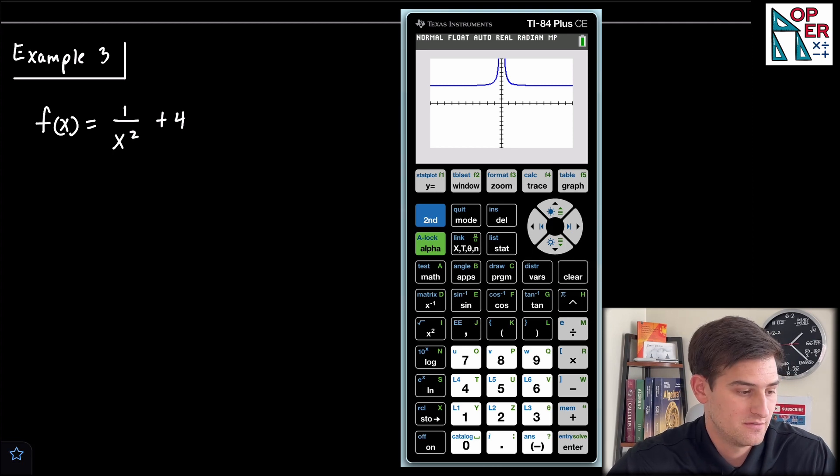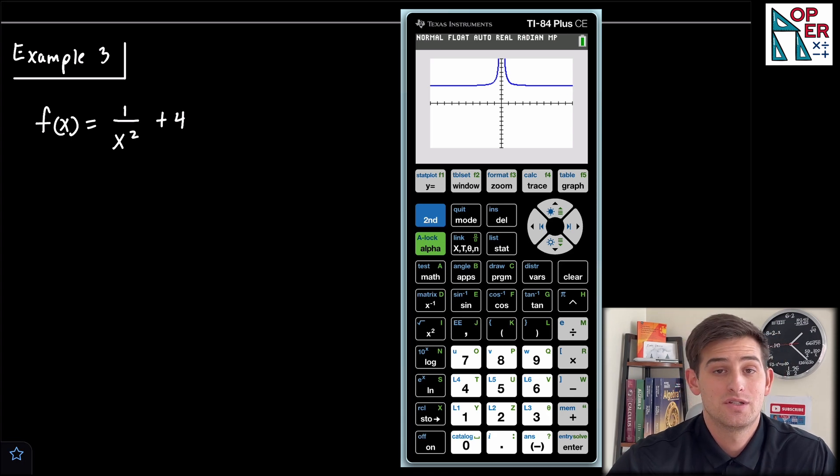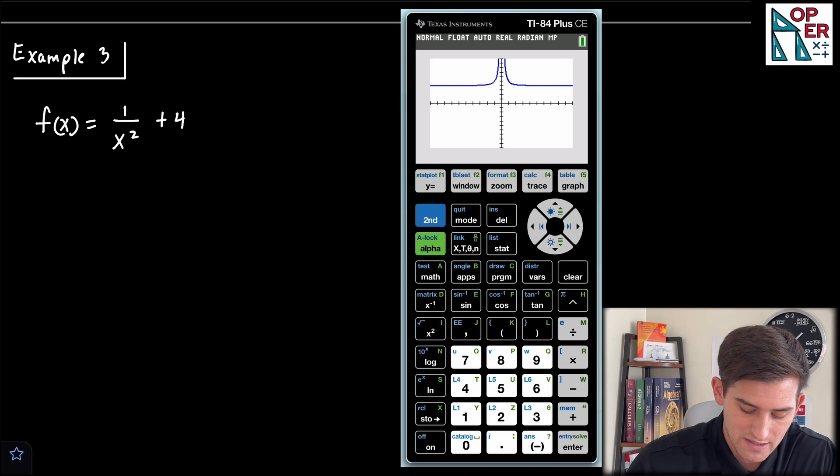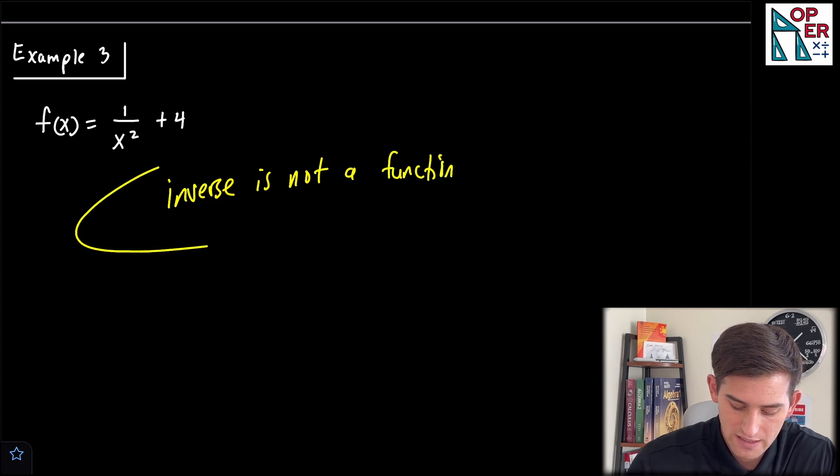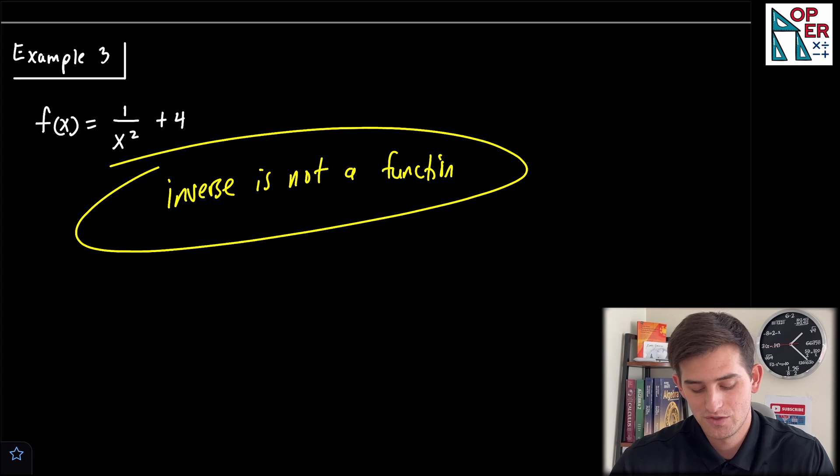And what do we notice? We see at the top here close to the y-axis that this is not going to pass the horizontal line test. So if it doesn't pass the horizontal line test, then we would say the inverse is not a function, all right? And we won't even find the inverse. We'll just leave it right there.